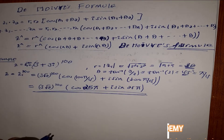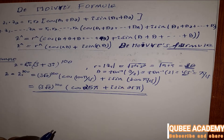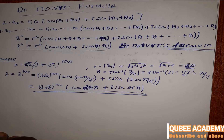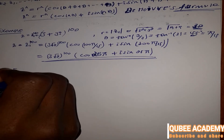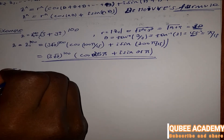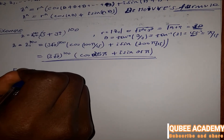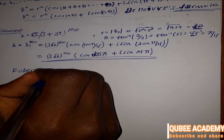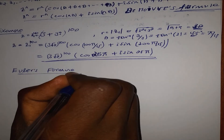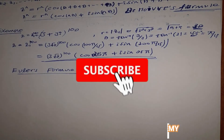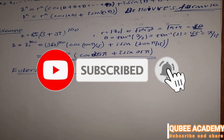Now we will write the formula using Euler's formula. Euler's formula gives us the exponential polar form.